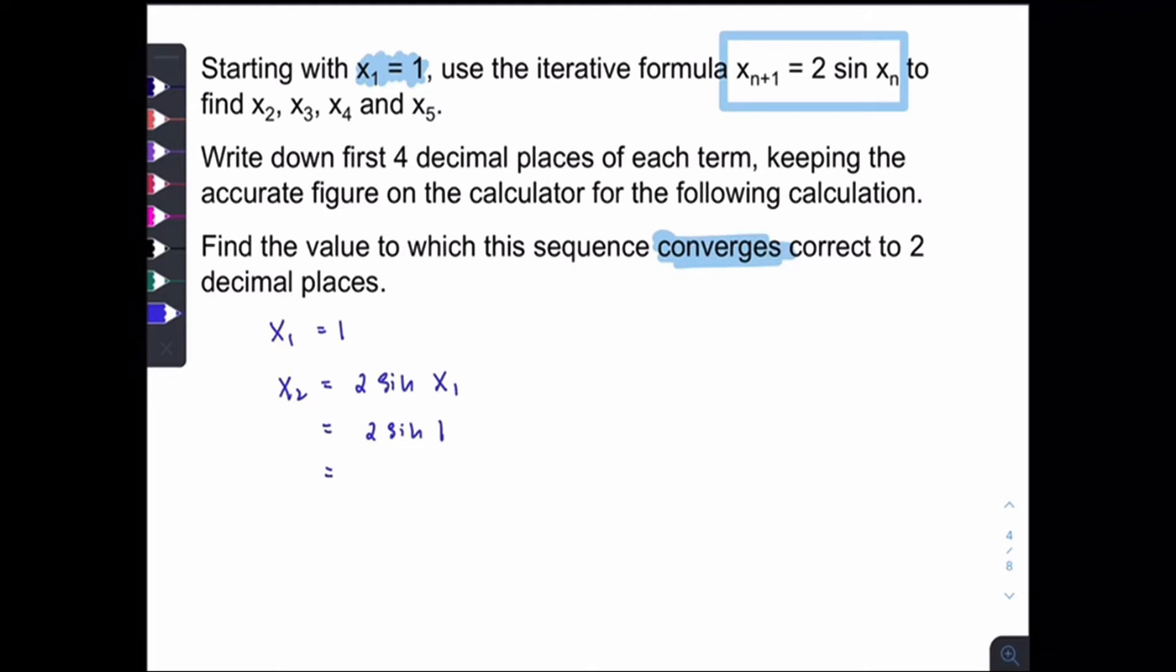And the x1 answer is 1. So you just need to press calculator to get 2 sin x1, which is 1.6829. And remember for this chapter, everything must be in radians and not degree.